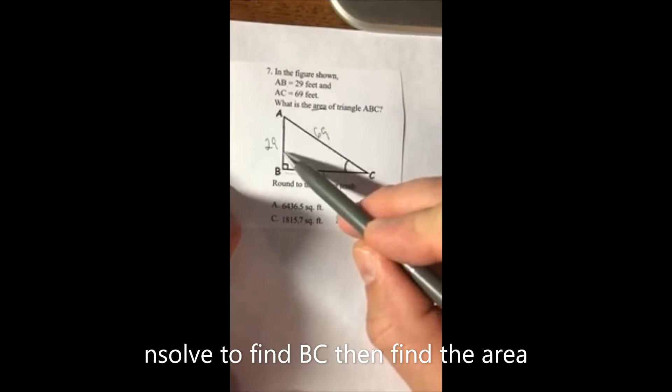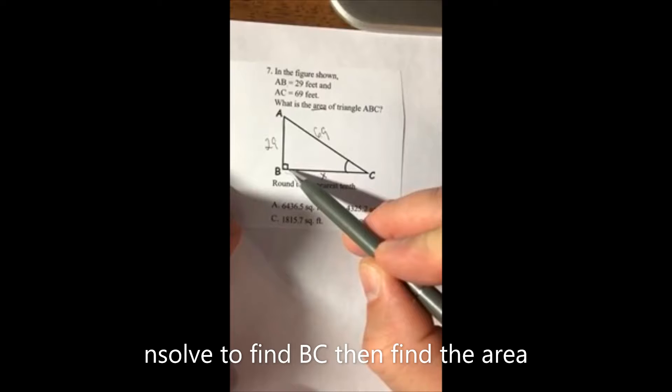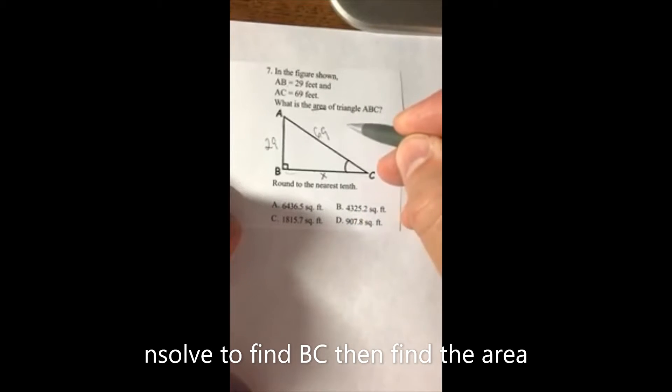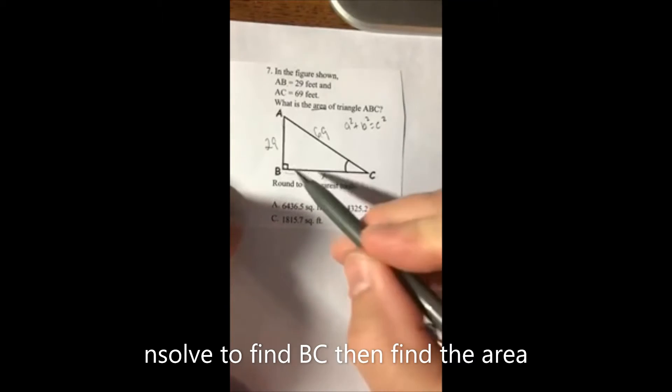We know two sides of a right triangle, so we can use the Pythagorean theorem immediately. Go ahead and write down the formula: a² + b² = c².